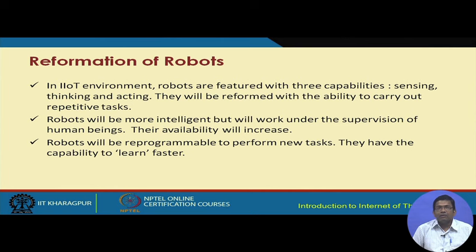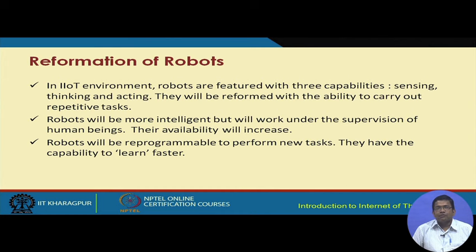Robots have traditionally been used in industry, and in IIoT, robots are a very important component. In a new form, robots can sense, think, and act, performing different tasks. They will be equipped with the ability to carry out repetitive tasks, and they are more intelligent. They can work under the supervision of human beings, can be programmed and reprogrammed to perform new tasks, and that way they can learn faster. Robots in a reformed manner can improve industrial processes more efficiently.